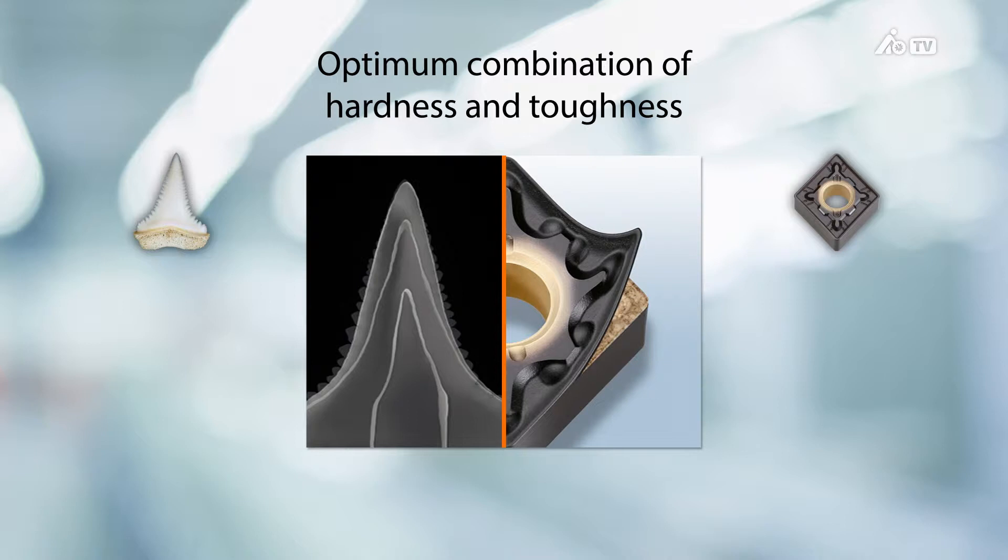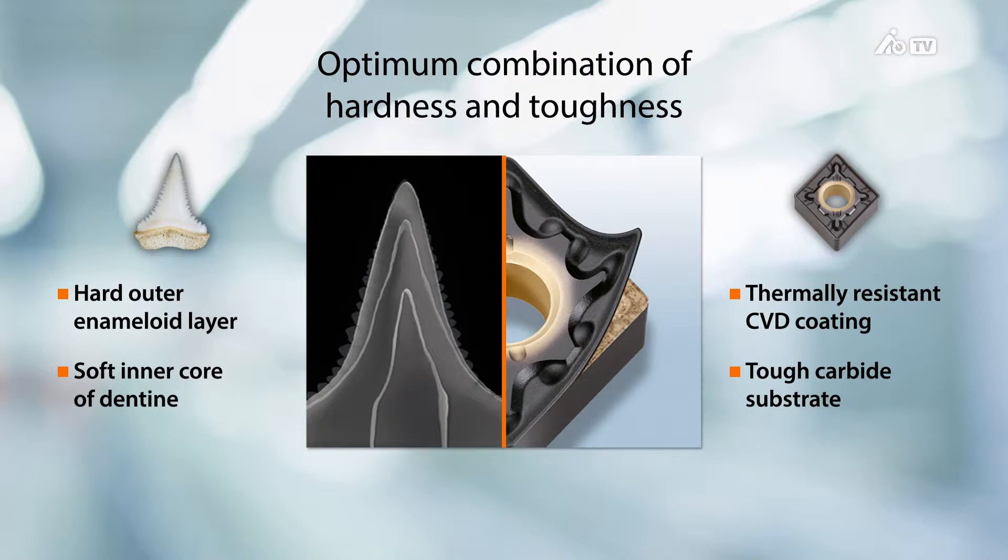But where would the shark be without its teeth? We've taken the evolutionary characteristics of the shark's tooth as the model for the Garant HB7020. Firstly, an optimum combination of hardness and toughness. The hardness is due to the multilayer CVD coating, the toughness to the carbide substrate, for high cutting speeds even with interrupted cutting and an undefined machining allowance.